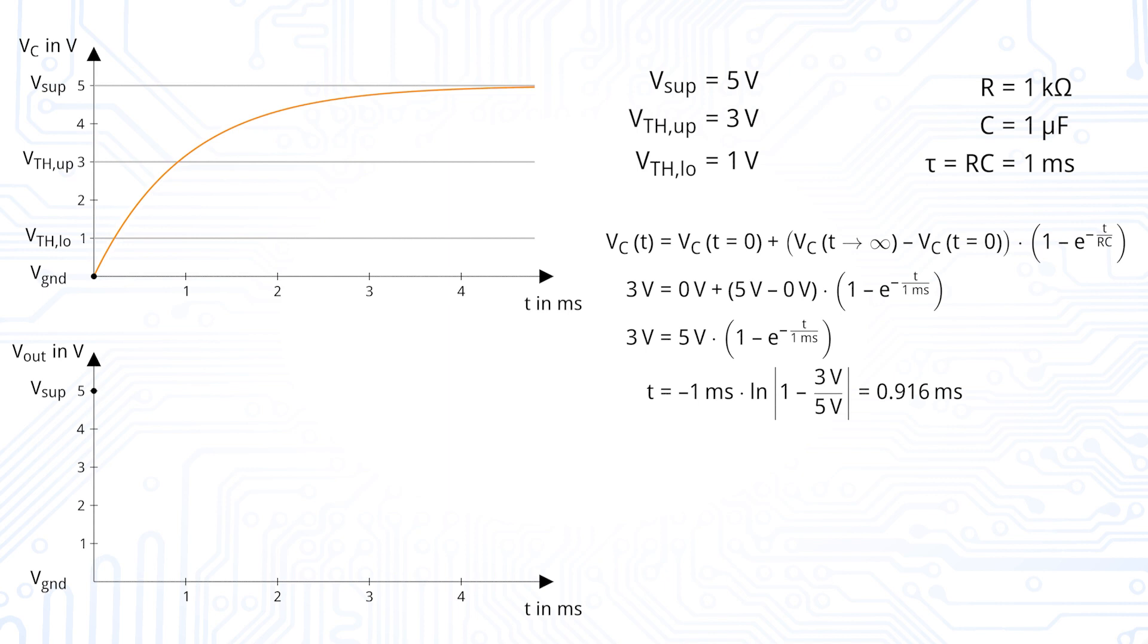Now, we want to know the time when the voltage reaches the upper threshold voltage of 3V. The oscillator reaches the upper threshold voltage after 0.916 milliseconds.